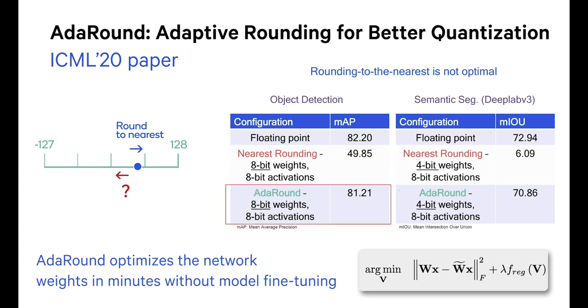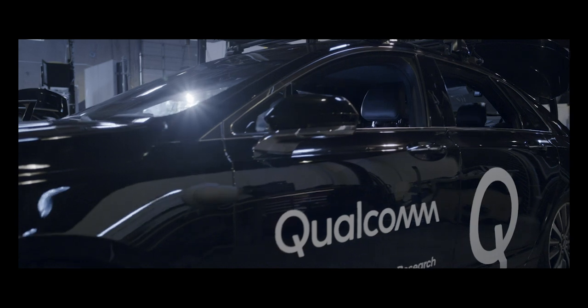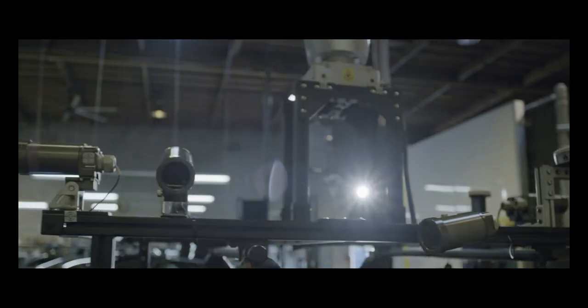Results for object detection and semantic segmentation tasks show AdAround significantly outperforms nearest rounding and provides performance close to floating-point models. To demonstrate this, we compare AdAround 8-bit weight and activation quantization with a baseline 8-bit quantization technique on an object detection model.